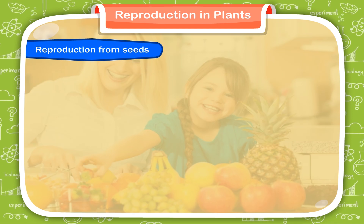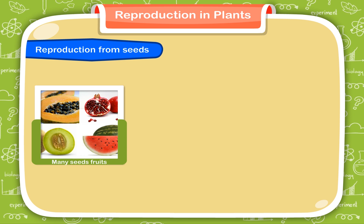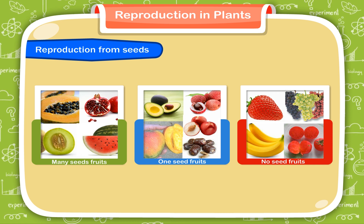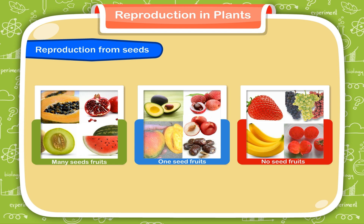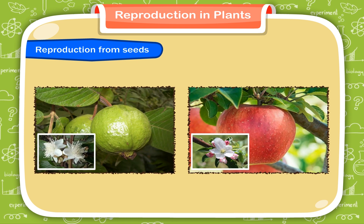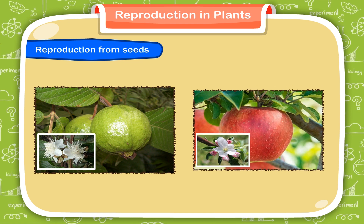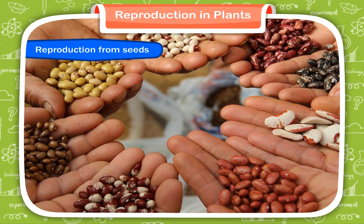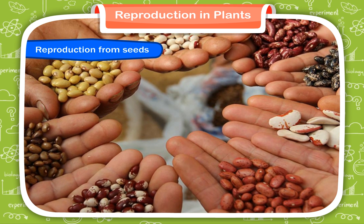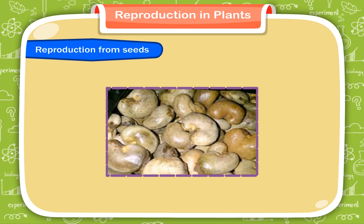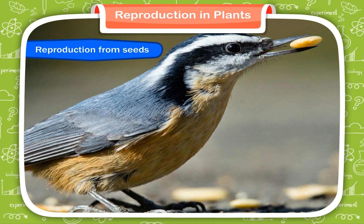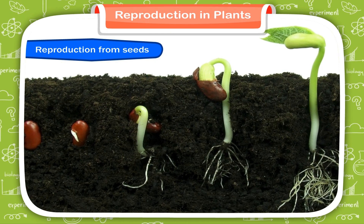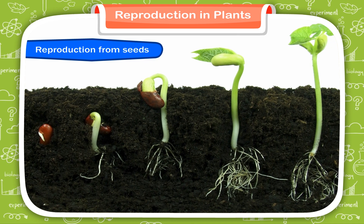Reproduction from seeds. We eat fruits. Some fruits have many seeds, some fruits have only one seed, and some have no seed at all. The seeds of different fruits have different shapes and sizes. Most plants produce many flowers that turn into fruits. They have seeds in them. But all seeds do not produce new plants. Some seeds are not fully developed, so they cannot grow into new plants. Some seeds have diseases or defects in them. Some seeds are eaten by birds or destroyed by insects and other animals. So only fully grown, healthy, intact seeds grow as new plants.